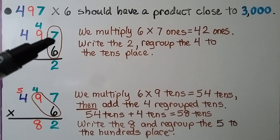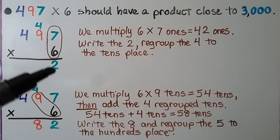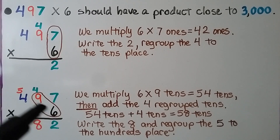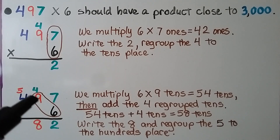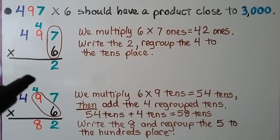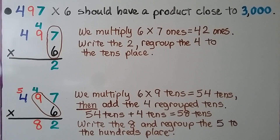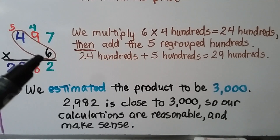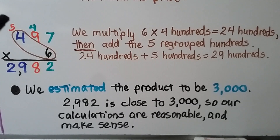We multiply six times seven ones — that's 42 ones. We write the two in the ones place and regroup the four tens to the tens place. Now we multiply six times nine tens, that's 54 tens, but we need to add the four regrouped tens. 54 plus four is 58 tens. We write the eight and regroup the five to the hundreds place. Now we multiply six times four hundreds — that's 24 hundreds. We add the five regrouped hundreds: that's 29 hundreds. We estimated 3,000, and 2,982 is close to 3,000, so our calculations are reasonable.